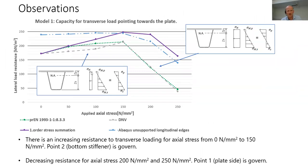Other observations are that we can see there's an increasing resistance to transverse loading for axial stress from 0 to 250 Newton per square millimeter. The reason for that is that the point number one at the plate side is the governing point, and we have the stress distribution as shown here. We have a decreasing resistance for axial stress for 200 and 250 Newton per square millimeter.